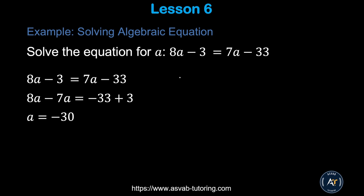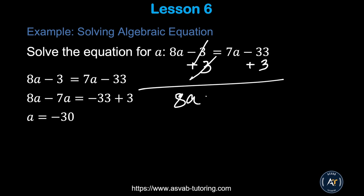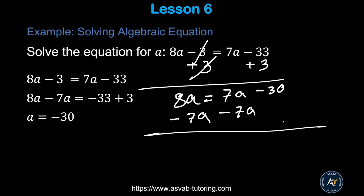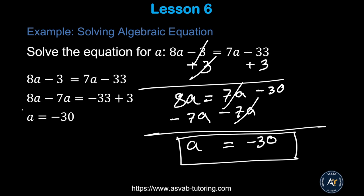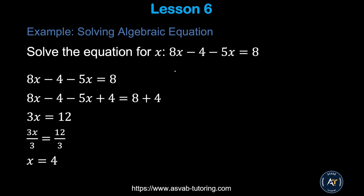Now let's learn how to solve different types of algebraic equations. For example: 8a − 3 = 7a − 33. The goal is to get the variable on one side and the constant on the other. Add 3 to both sides: 8a = 7a − 30. Then subtract 7a from both sides: a = −30.